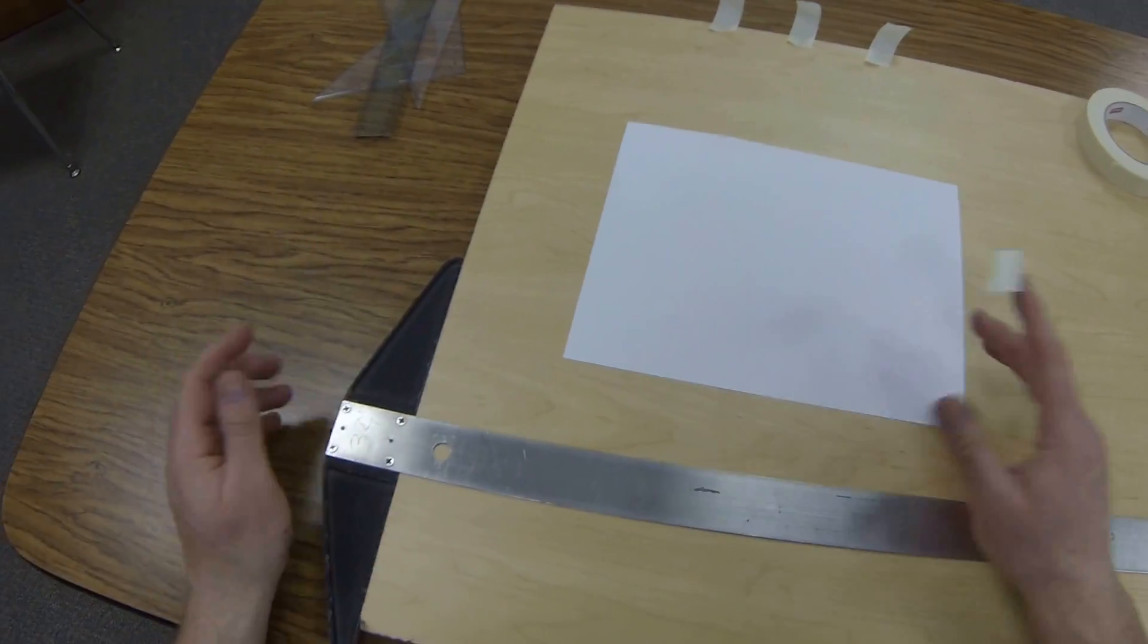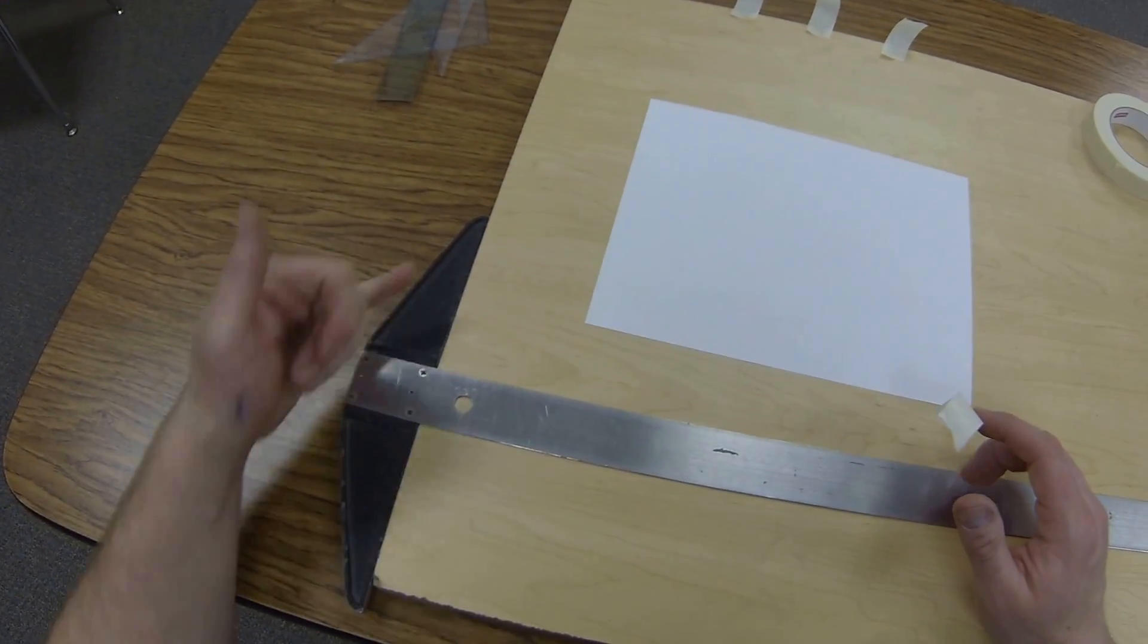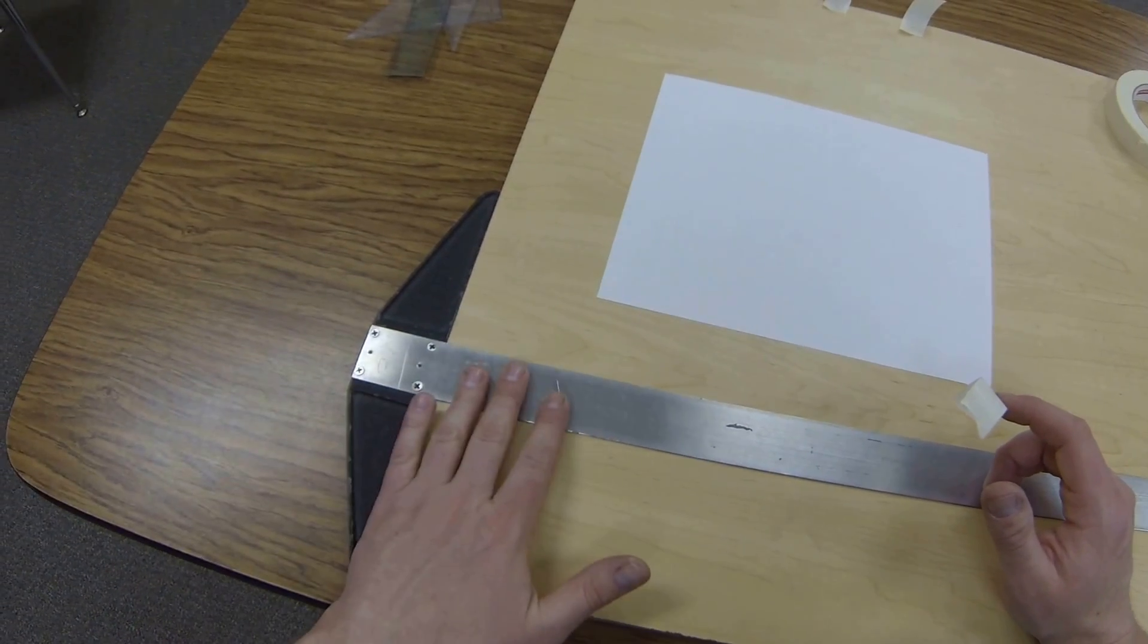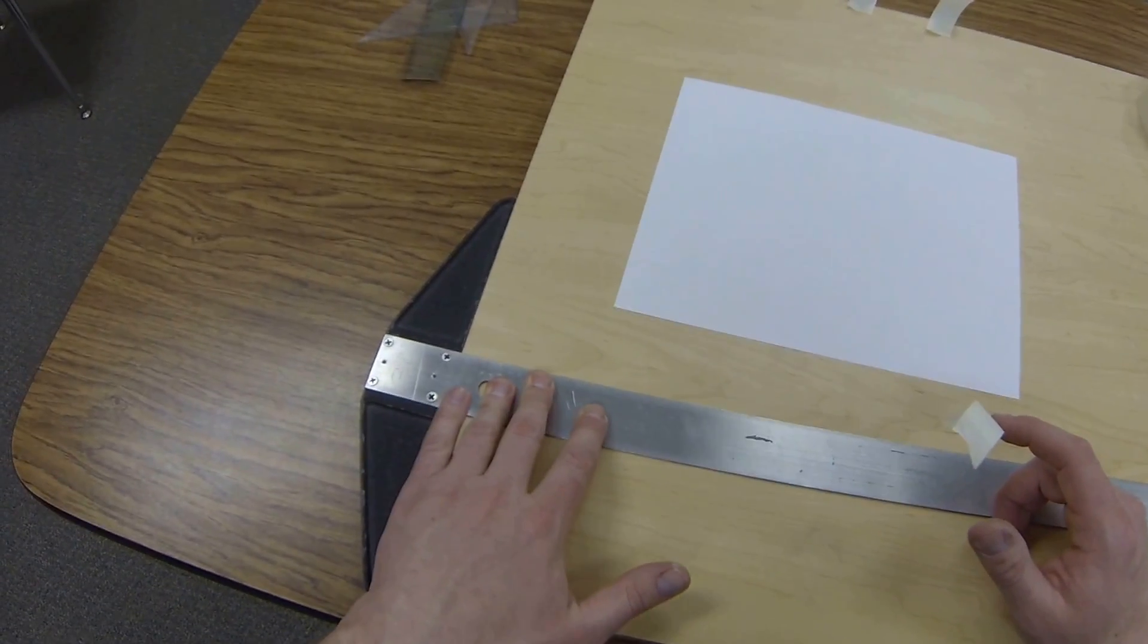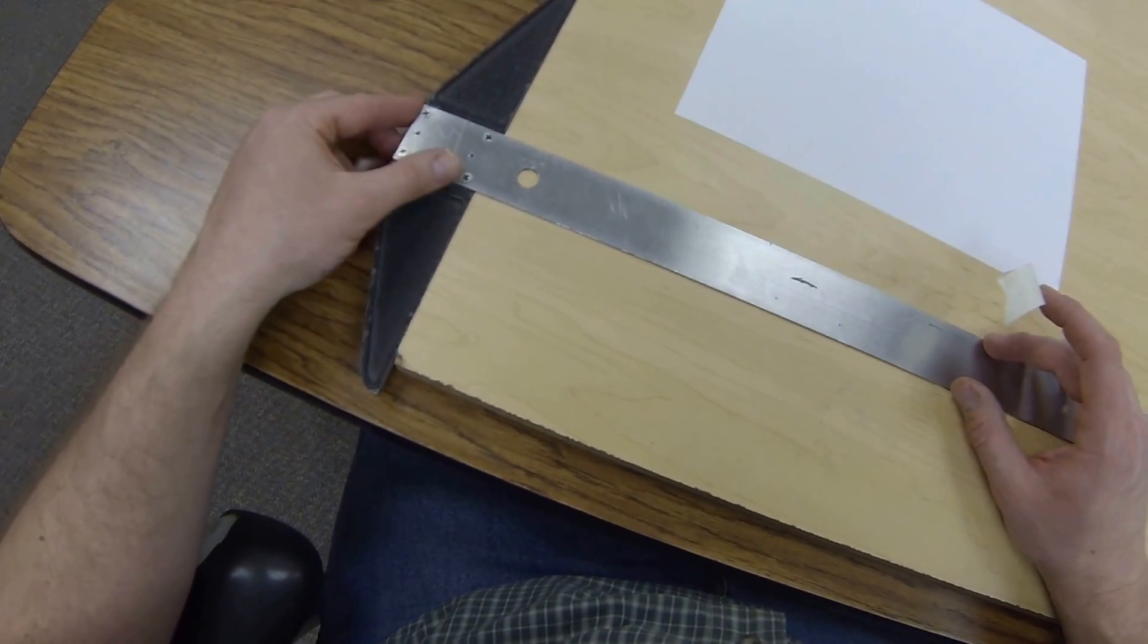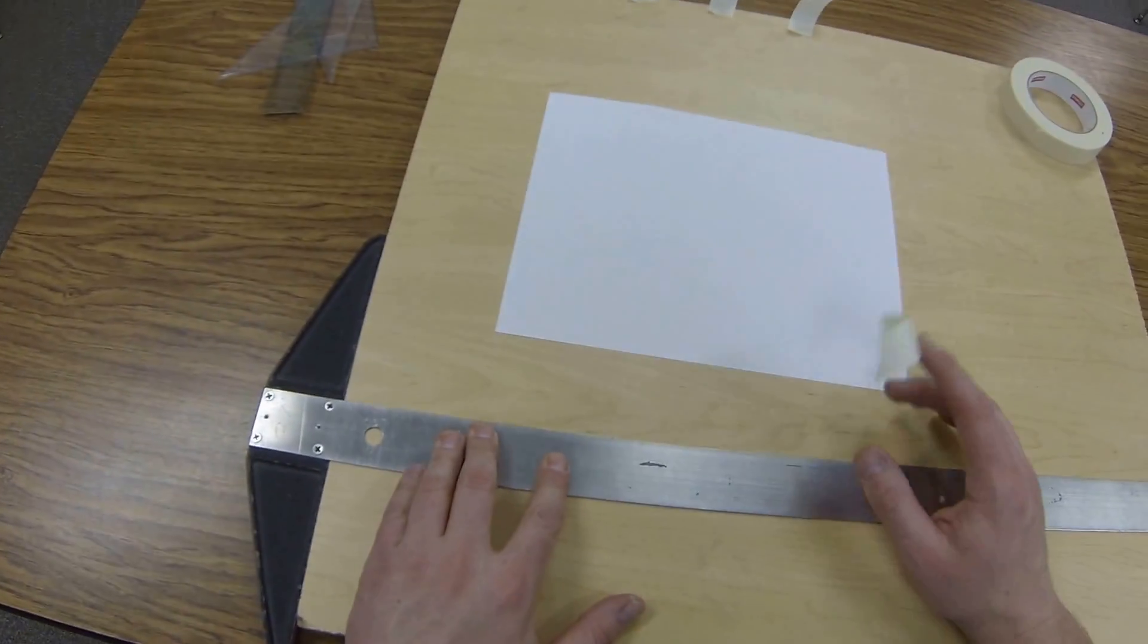First thing I want to do is take the head of my t-square and make sure it's tight to the edge of my drafting board. I can do this by putting my fingers on, pulling in, and pushing down on my t-square blade, holding this about an inch or so below, so right about there.